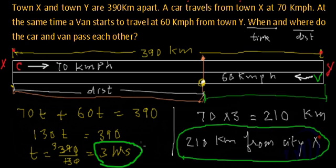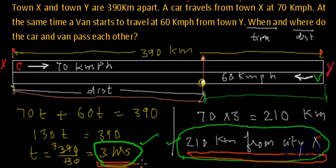And they will pass each other after 3 hours they start. Right? So this is the time taken and this is the point. This is where they cross and this is when they cross.